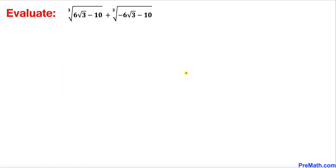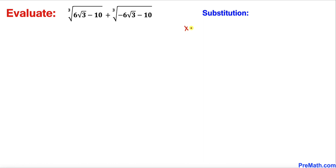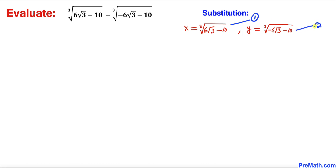To make things simple, we'll start with a substitution. Let x equal the cube root of the first expression — that is, the cube root of (6√3 − 10) — and let y equal the cube root of the second expression, the cube root of (−6√3 − 10). We'll call these equation 1 and equation 2.